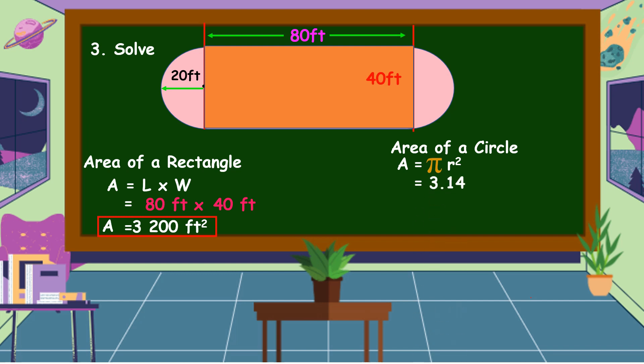The estimated value of pi is 3.14 and the radius is 20 feet raised to the power of 2. Bring down 3.14 times 20 feet times 20 feet equals 400 square feet. Let's multiply 3.14 by 400 square feet is equal to 1,256 square feet. This is the area of a circle.